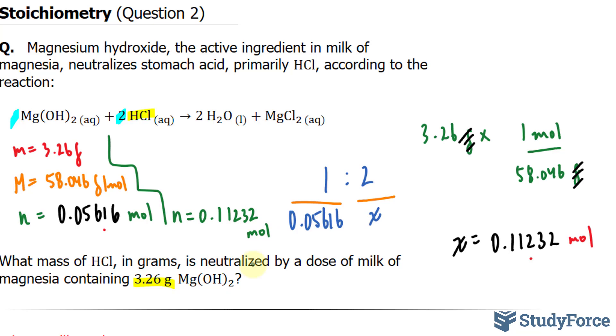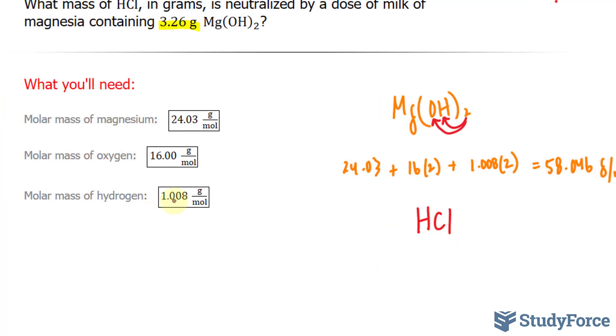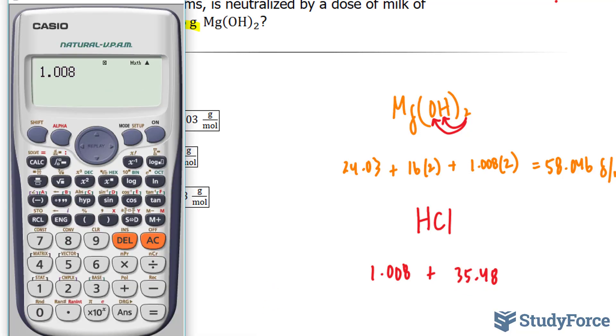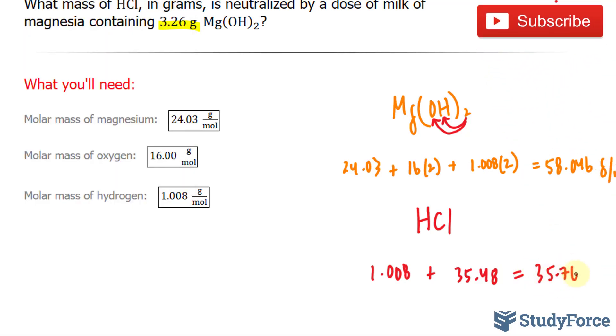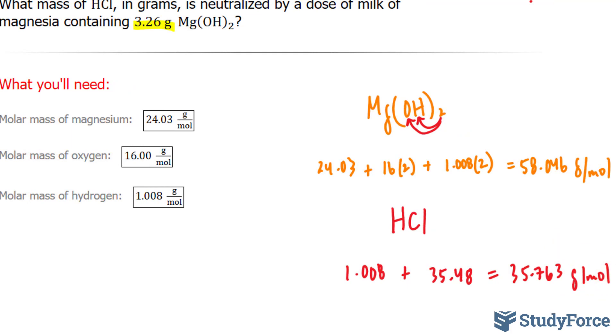Now I need to find the molar mass of HCl, which isn't hard to do. I'll use the values I have here. HCl: I'll take 1.008, multiply it by 1, I don't need to show that. Plus, Cl is not written here, but the molar mass of chlorine is 35.48. Using our calculator, 1.008 plus 35.48 gives me 35.763 grams per mole. I'll write that up there too.